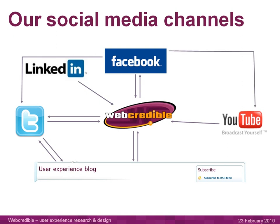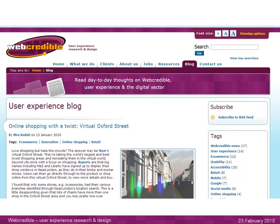Facebook is then linked to YouTube — all video content goes through Facebook and YouTube. Then we have Flickr, where all our photo content goes through. This links people back to the website, and photo content goes through Flickr and Facebook as well. So, it's a reasonably complex web of social media channels.